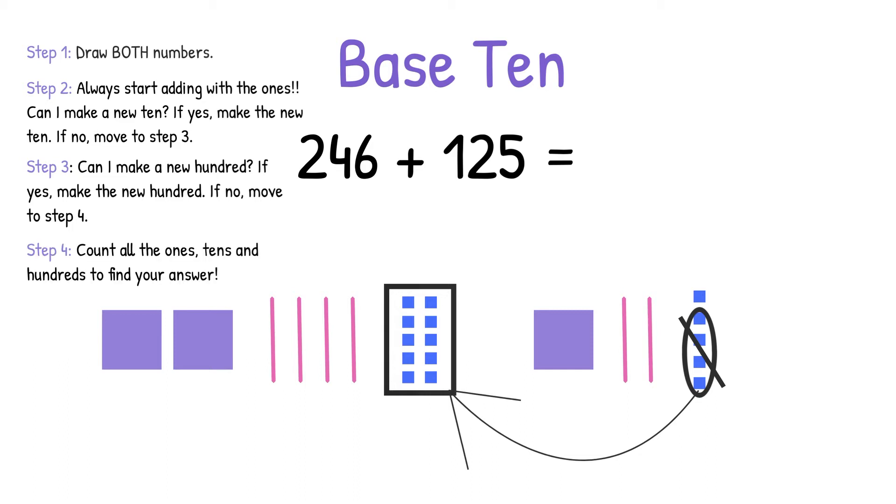Step 4 is count up all your ones, tens, and hundreds to find your answer. So we have 1 one left, we have 7 tens all together, and we have 300s. So our answer is 371.